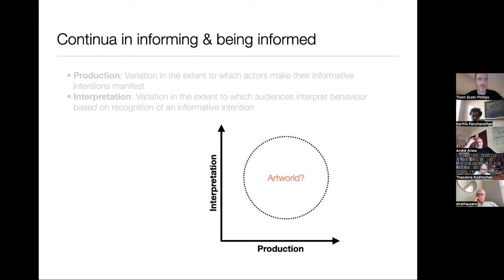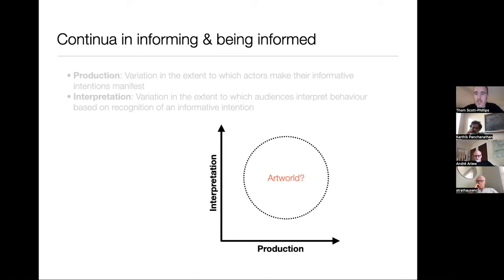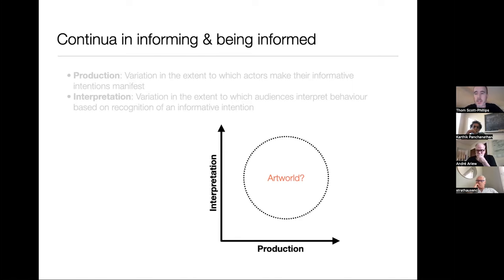That leads me on to the third thing I want to talk about, which is art and the art world. Given what I've said so far, you won't be surprised that I'm going to suggest that the art world is also exploiting the same cognitive processes — in all sorts of diverse ways, not necessarily in the top corners, but in a large part of the middle of the space in different ways.